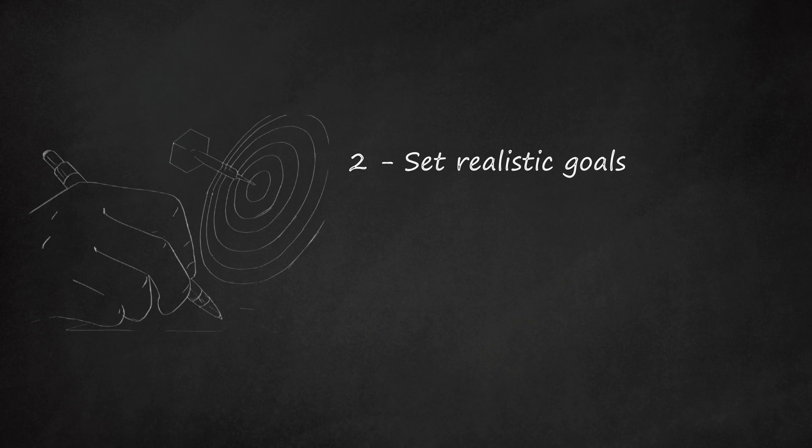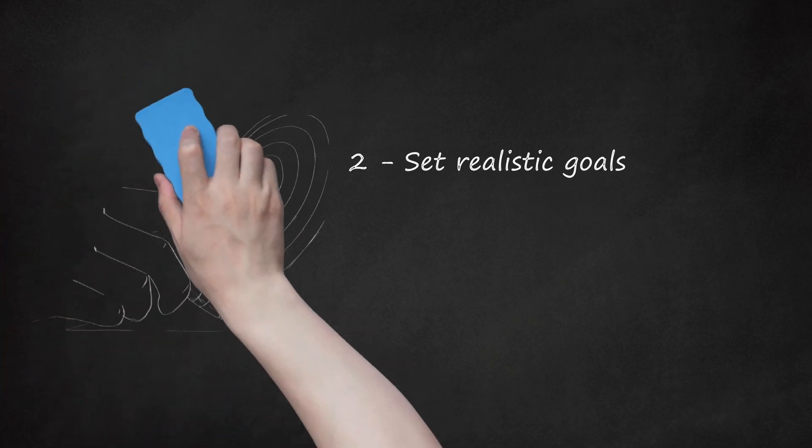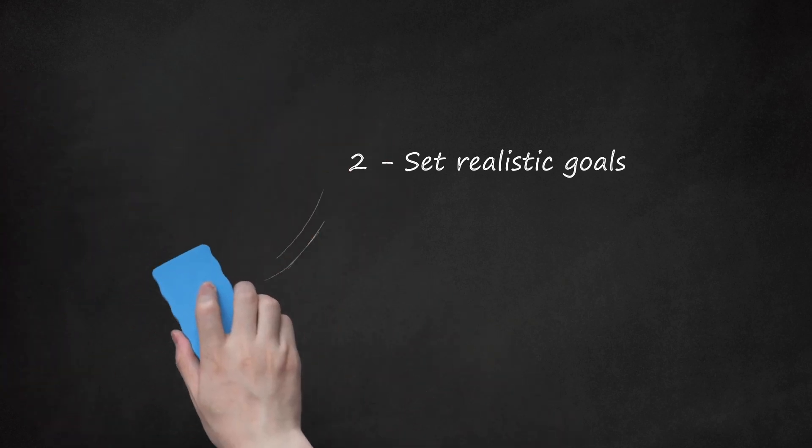Measurable. Make sure you can measure your progress so you know when you have achieved your goal. Achievable. Make sure your goal is practical so that you can be sure to achieve it realistically. Relevant. Make sure your goal is relevant to the direction you want your nature to go. Time Bound. Give your goal a deadline.